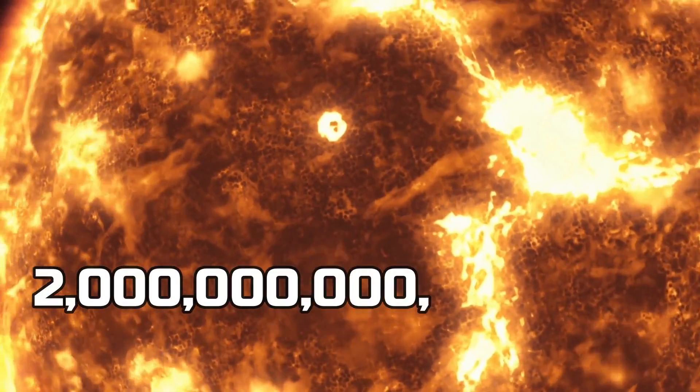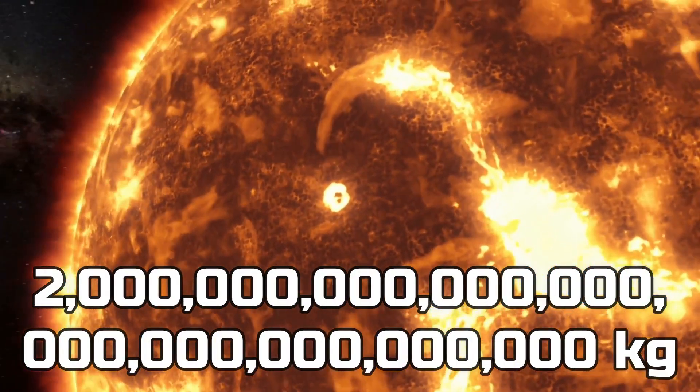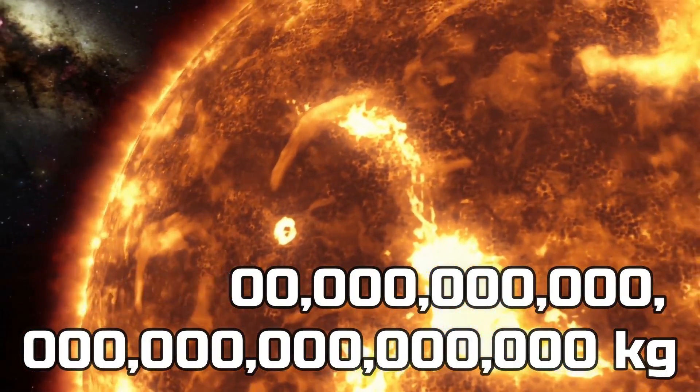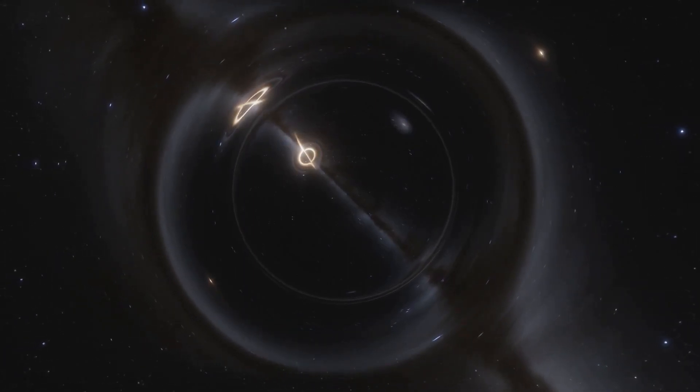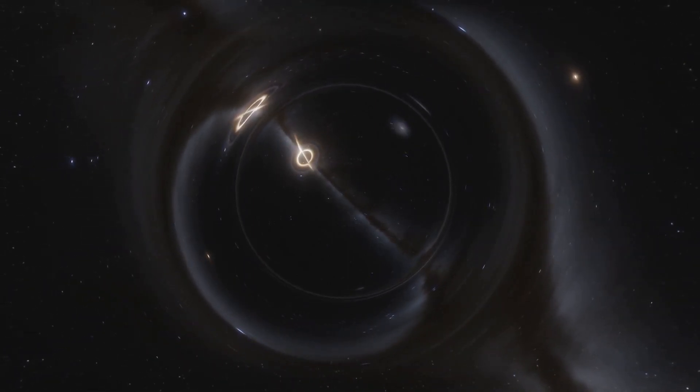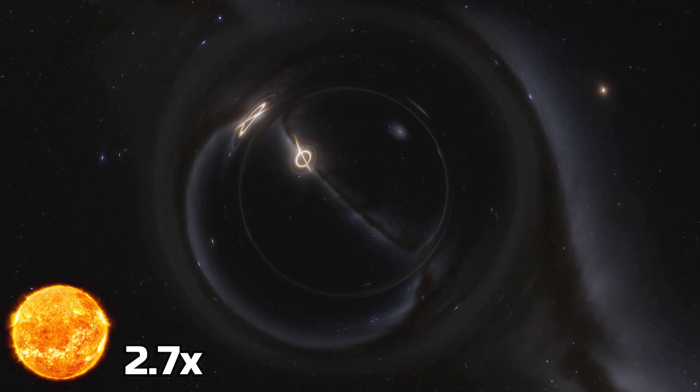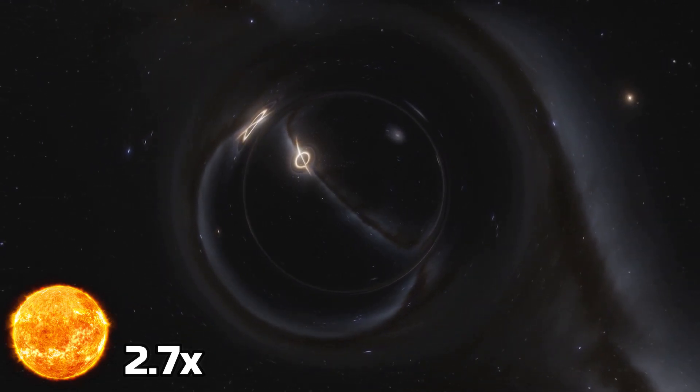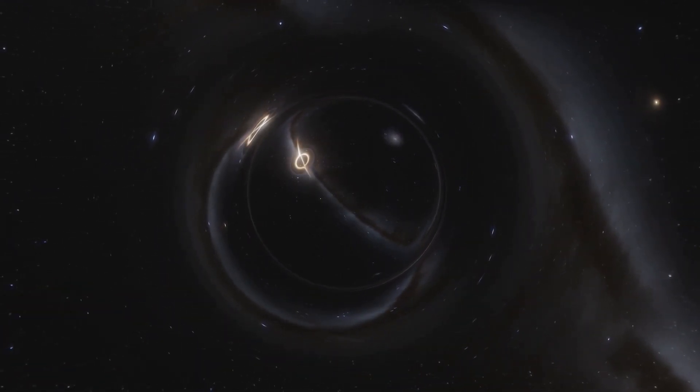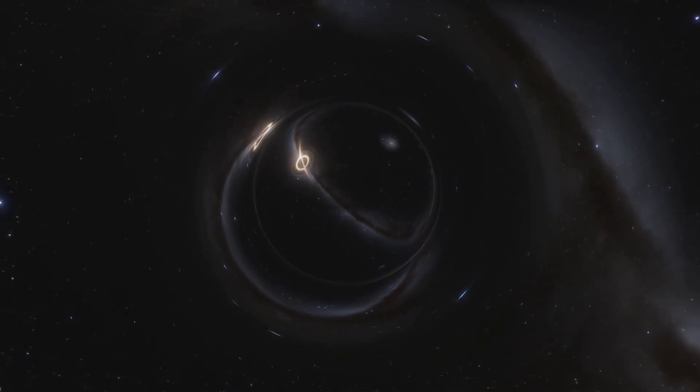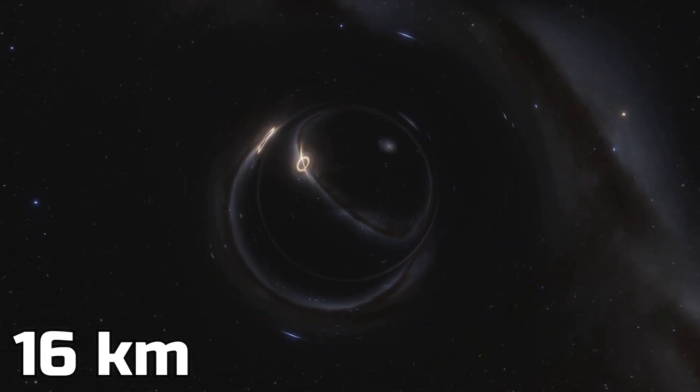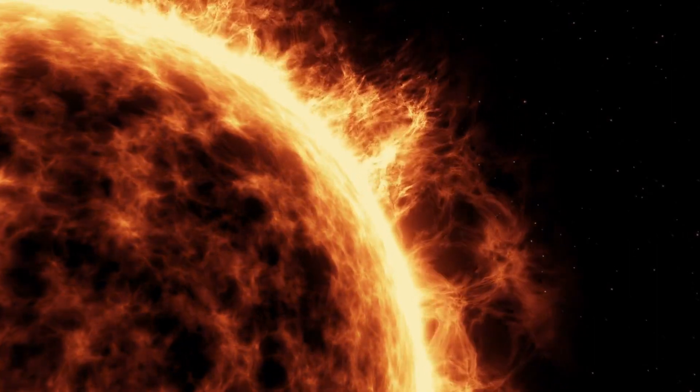The mass of the Sun is two million trillion trillion kilograms. The smallest known black hole in the universe has a mass of 2.7 times of our Sun. And this is a really small black hole with a diameter of only 16 kilometers.